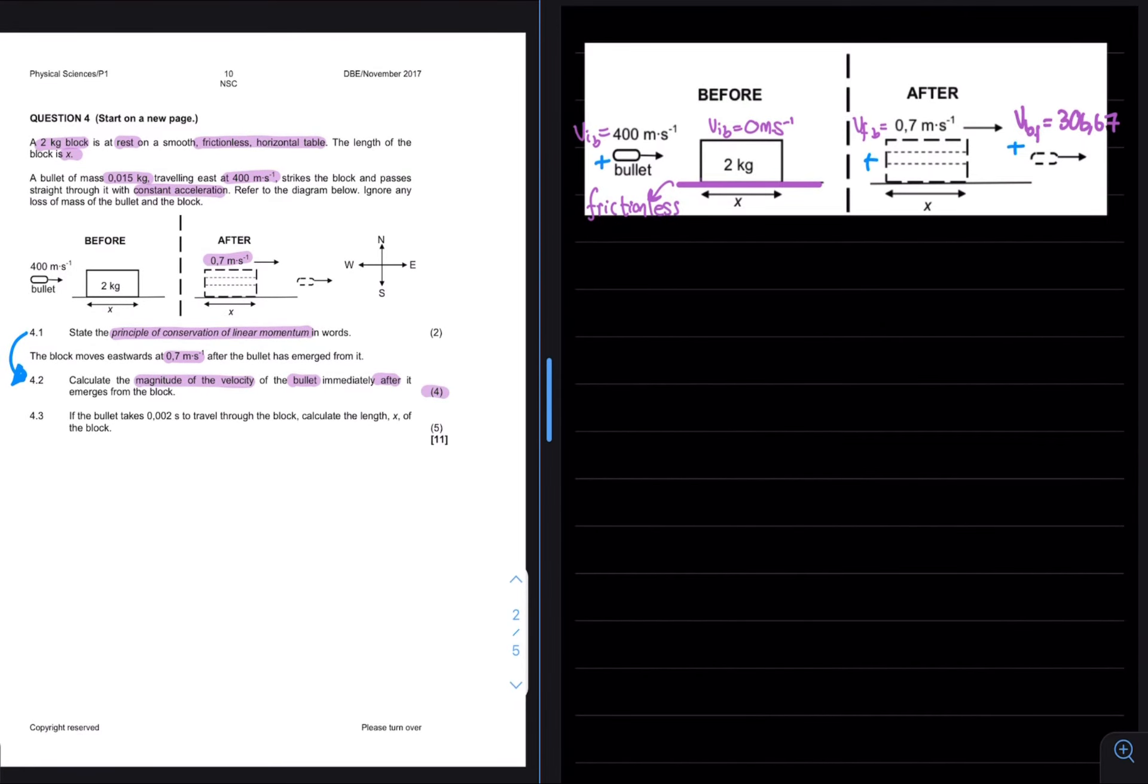4.3 says, if the bullet takes 0.02 seconds to travel through the block, calculate the length x of the block for a total of 5 marks.